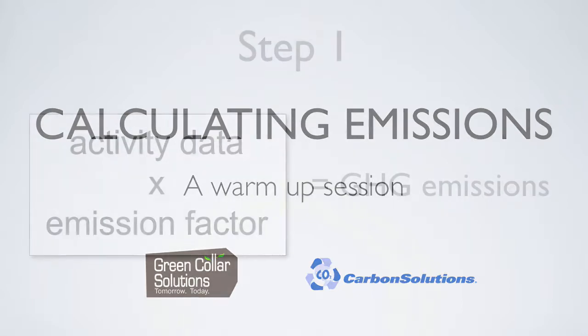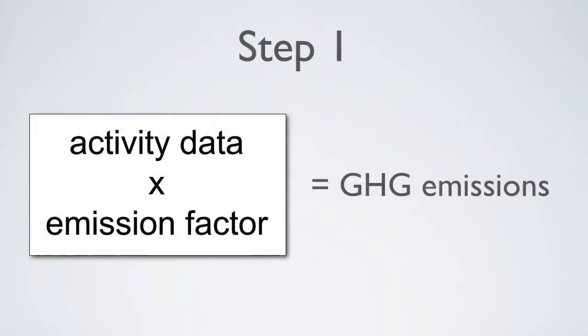The first step is simply multiplying the activity data by the emission factor, which gives you the greenhouse gas emissions from a given source.